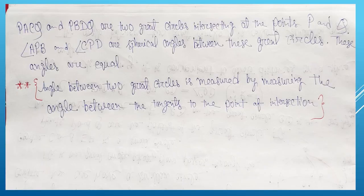So PSEQ and PBDQ are two great circles intersecting at the points P and Q. Angle APB and CPD are spherical angles between these two great circles. These two angles are equal. On a geometrical sphere, the great circles PSEQ and PBDQ intersect each other at point P and Q, and the angles made by these two great circles at P are known as their spherical angles.